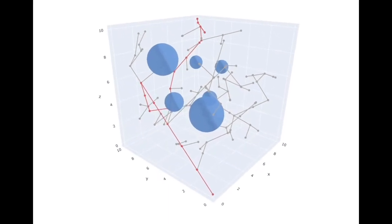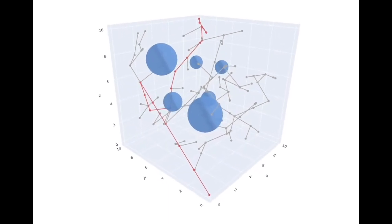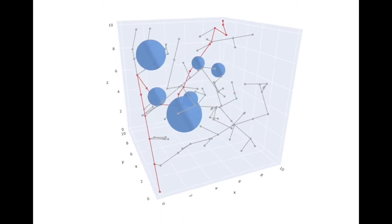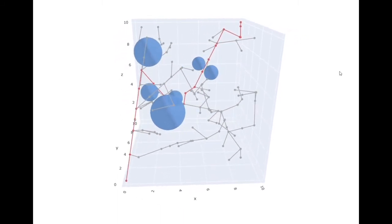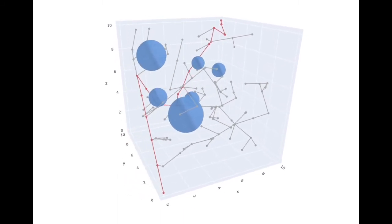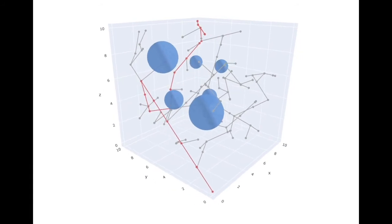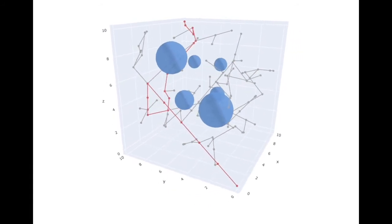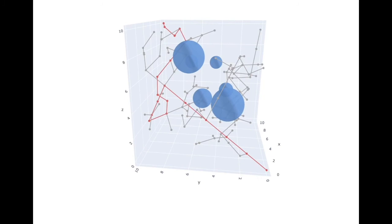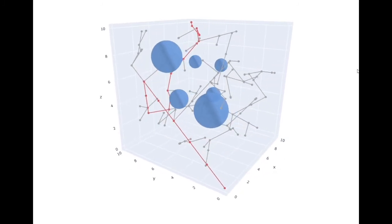If we now run the RRT March version of the algorithm in the exact same environment, the result is quite different. The tree itself is far less dense and the long straight portions within it are a result of the algorithm's marching behavior. Once again, a path from the starting point to the goal is found but isn't necessarily the most efficient solution.